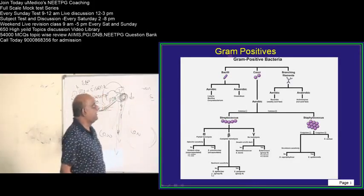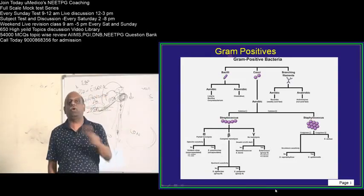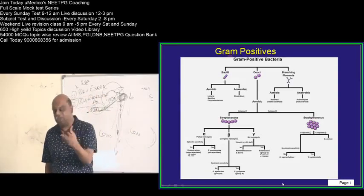the best example of an optochin sensitive, gram positive, aerobic, alpha hemolytic streptococci is the streptococcus pneumoniae. Yeah, that should come to your mind.